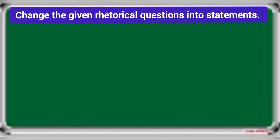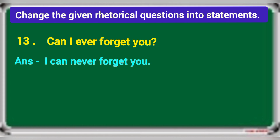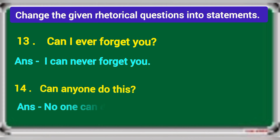From thirteenth to twentieth, change the given rhetorical questions into statements. Thirteenth: can I ever forget you? If in the rhetorical question there is 'ever', in the statement you use 'never'. Answer: I can never forget you. Fourteenth: can anyone do this? If there is 'anyone' in the rhetorical question, use 'no one' in the statement. Answer: no one can do this.